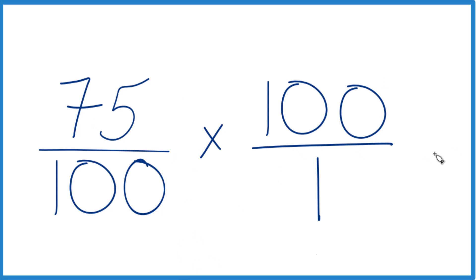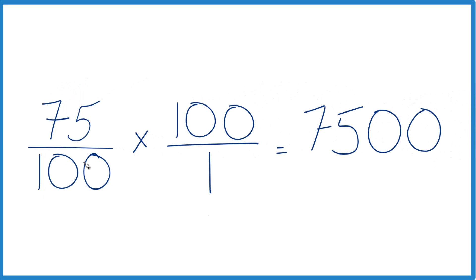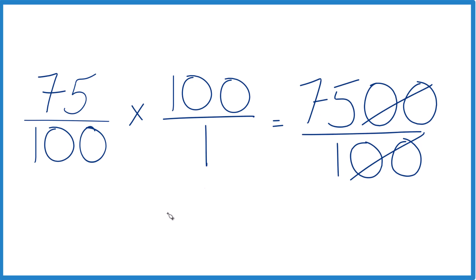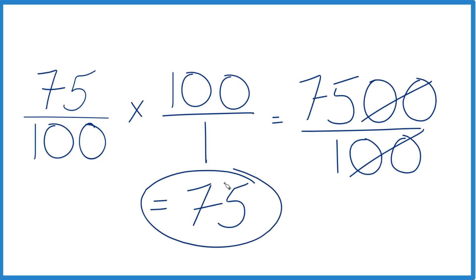75 times 100 is 7,500. 100 times 1 is 100. And so what we can do is just cross these zeros out. We have 75 over 1, and that equals 75 — which is what we found before. So 75% of 100 is just 75.